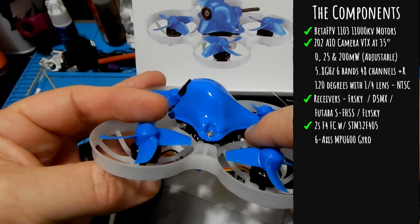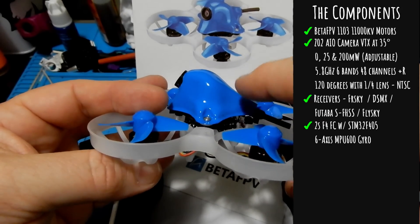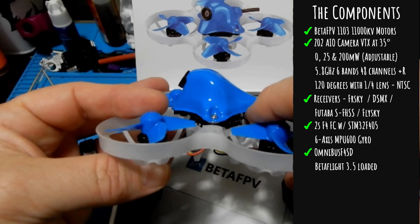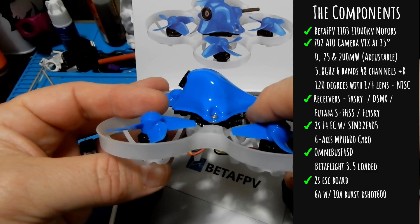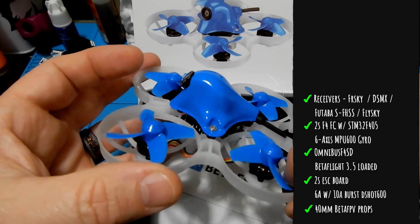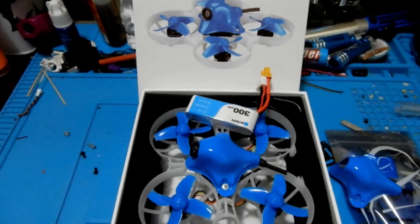Next up we have our stack starting with our flight controller - that's a 2S F4 flight controller with the STM32 F405 processor, a 6-axis MPU6000 gyro. Mine came pre-flashed with Betaflight 3.5 with the Omnibus F4 SD target. The 4-in-1 ESC is a 2S ESC board with 6 amp burstable to 10 amp, DShot 600. And lastly we have the Beta FPV branded 40 millimeter four blade prop.